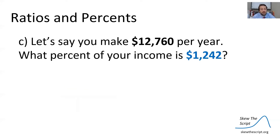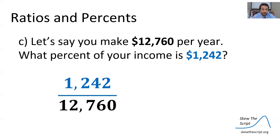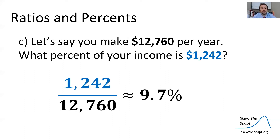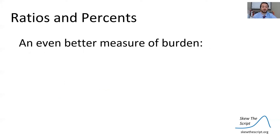Finally, let's say you make $12,760 per year — that is the individual poverty line in the United States in 2020. If you make below this number, you are officially below the poverty line. We take our ratio: 1242 divided by 12,760 comes out to 0.097, which is 9.7%. That's almost 10% of your income — a hefty chunk spent on health insurance.